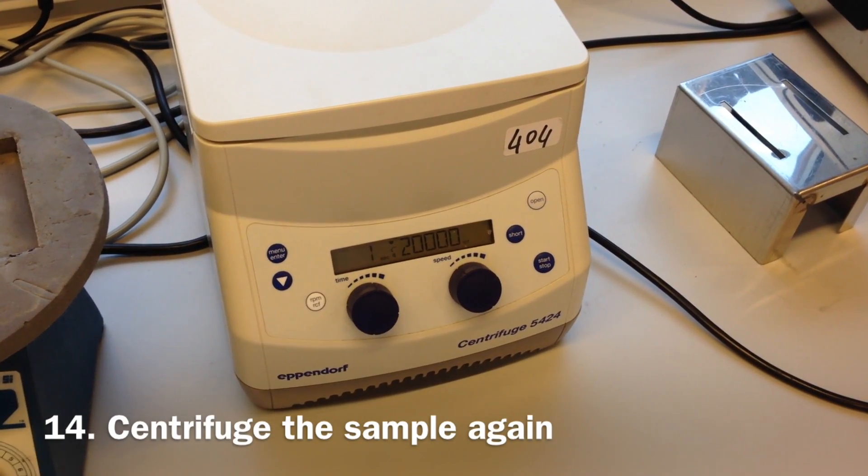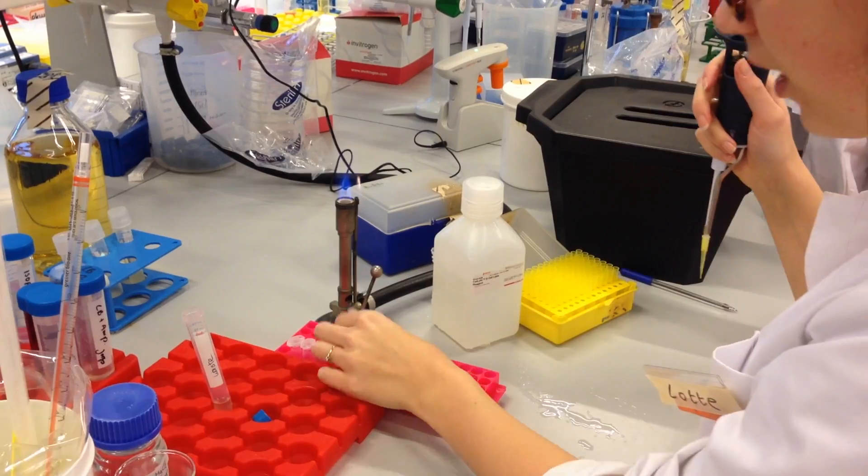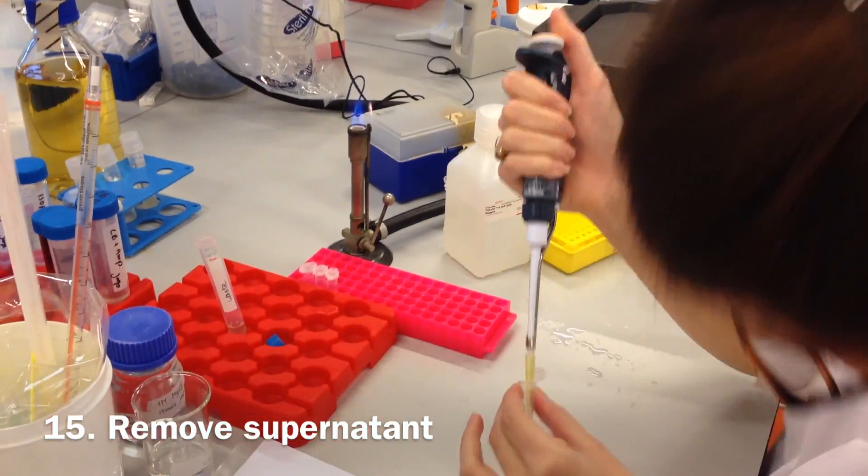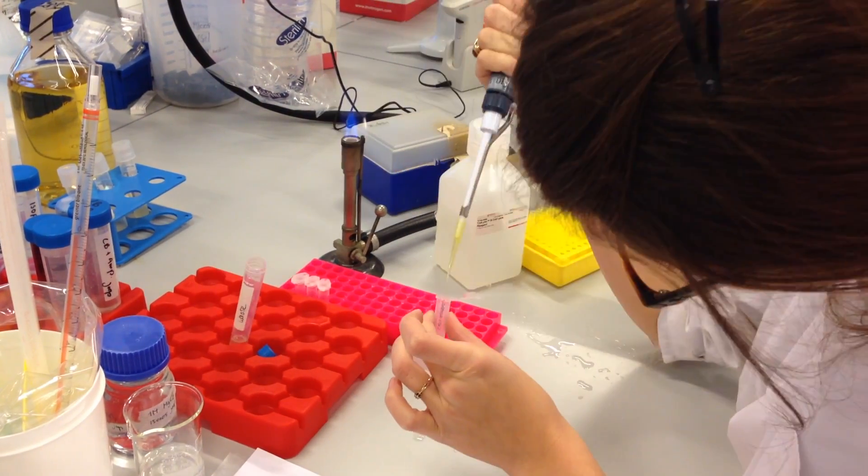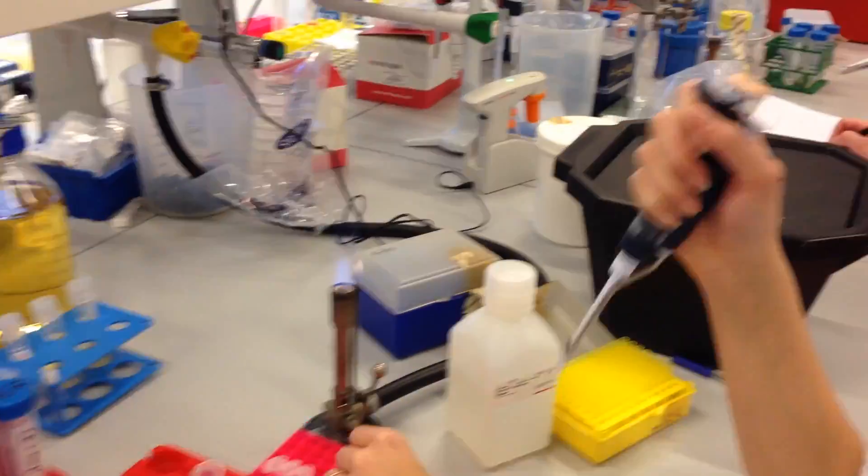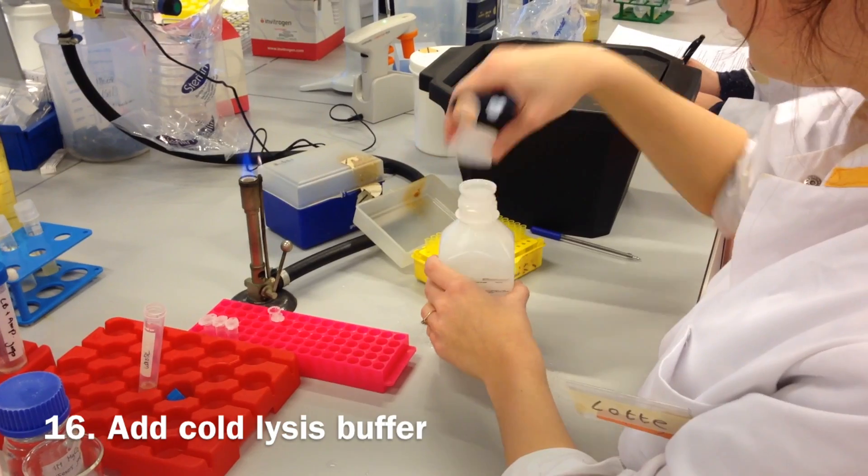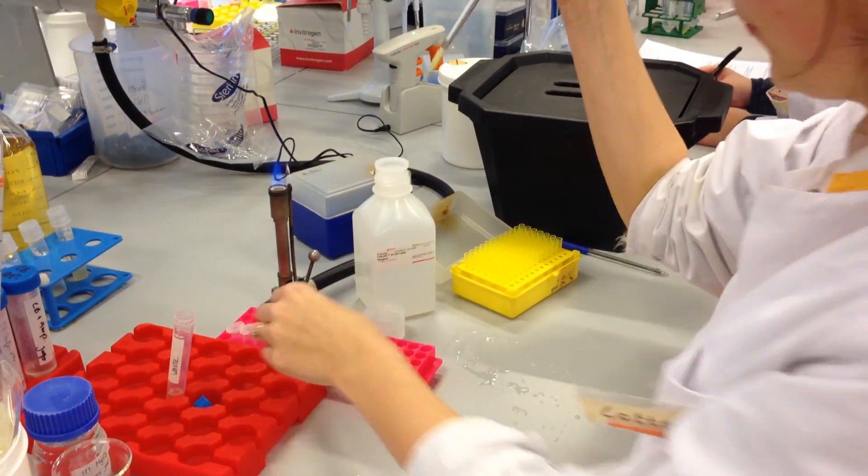Centrifuge the eppendorf with the sample again for 2 minutes. Remove the supernatant from the eppendorf. Again, be careful. Add cold lysis buffer to the eppendorf. Incubate the sample for 20 minutes on ice.